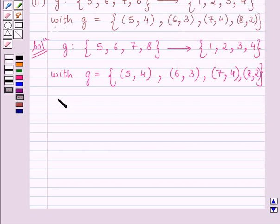So we can write g(5) = g(7) = 4. Therefore, g is a many-one function.